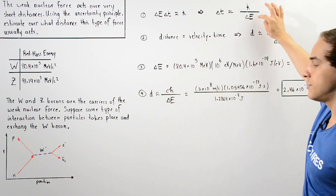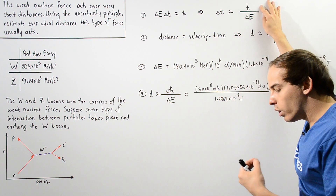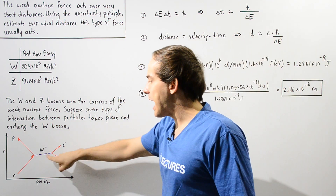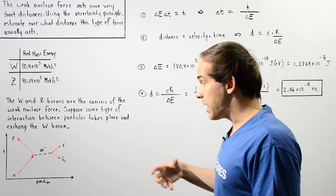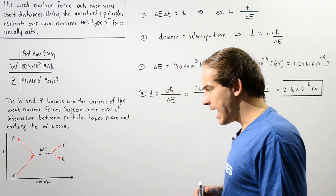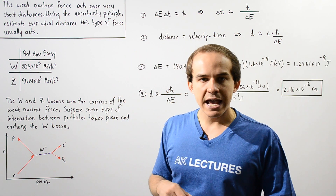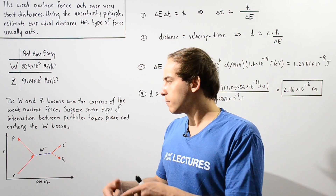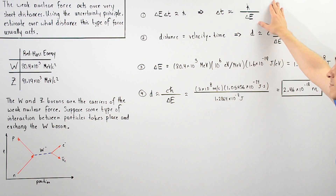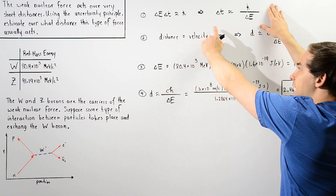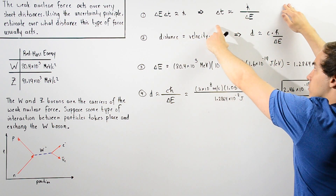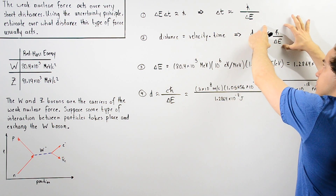Delta T is the time interval over which the particle travels while mediating the weak nuclear force. To calculate the distance, we multiply the velocity of our particle — assumed to be the speed of light c — by the time interval ΔT. So distance = c · ΔT = c · ℏ / ΔE.